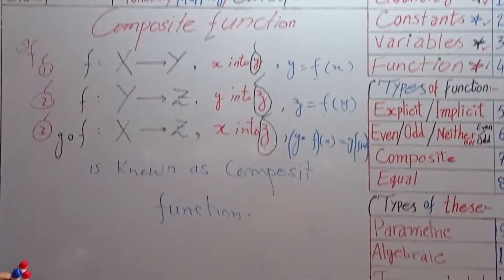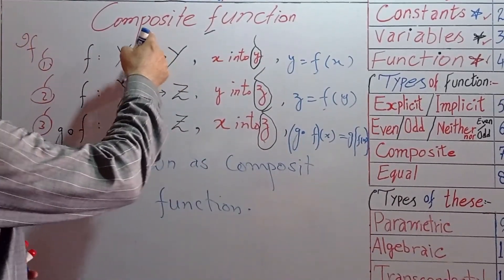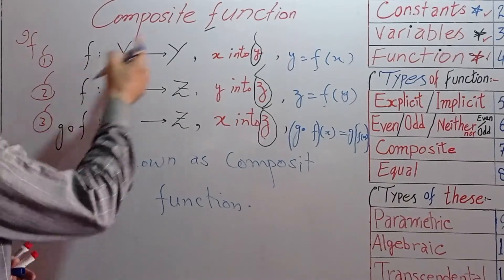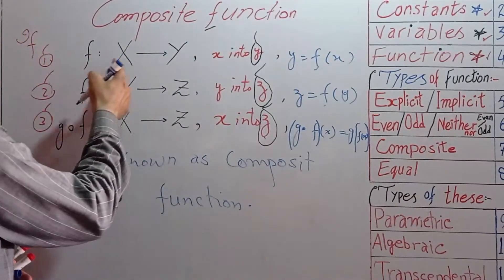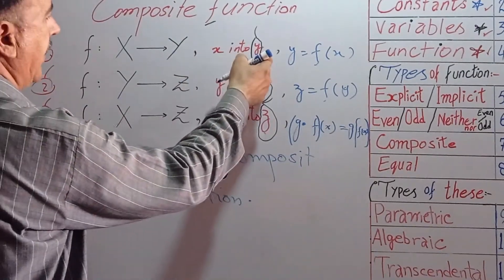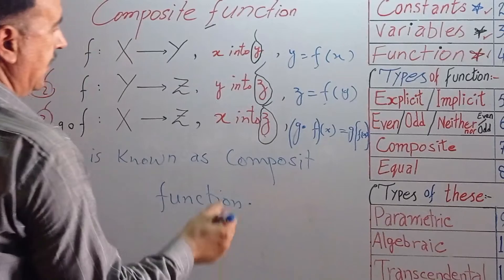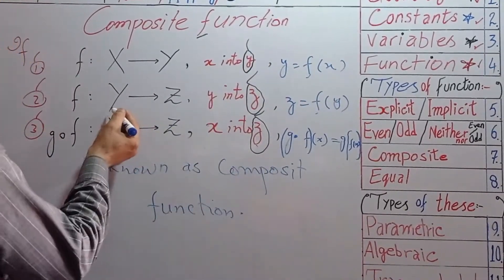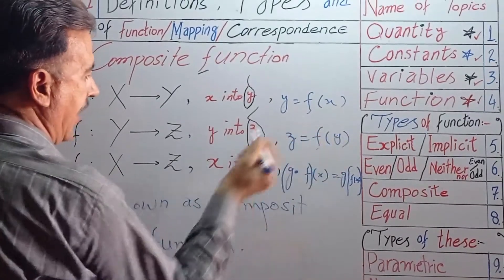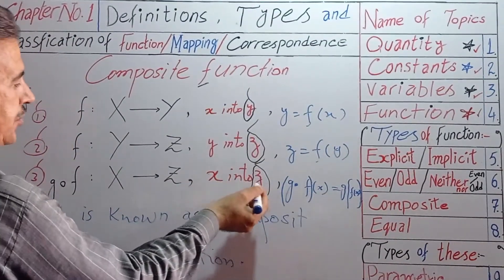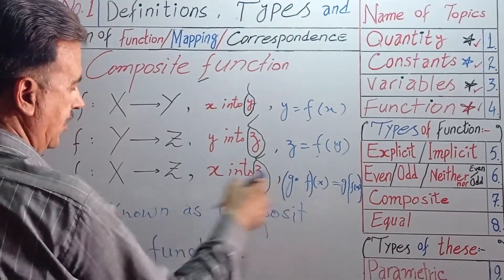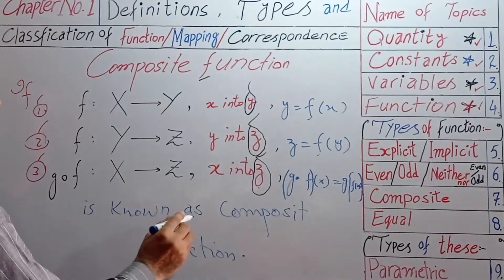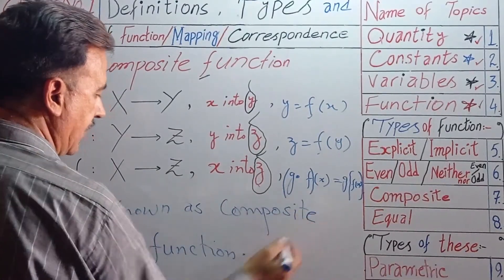Once again: composite function — f means function from x to y, y is equal to f of x; g is a function from y to z, z is equal to g of y; and from x to z, g of f of x, written as gof(x), is known as a composite function.